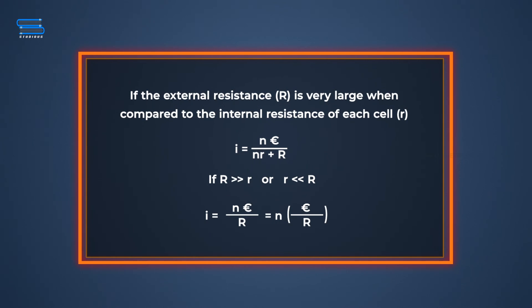So the current through the load resistance R will be n times the current sent by a single cell through the same R.